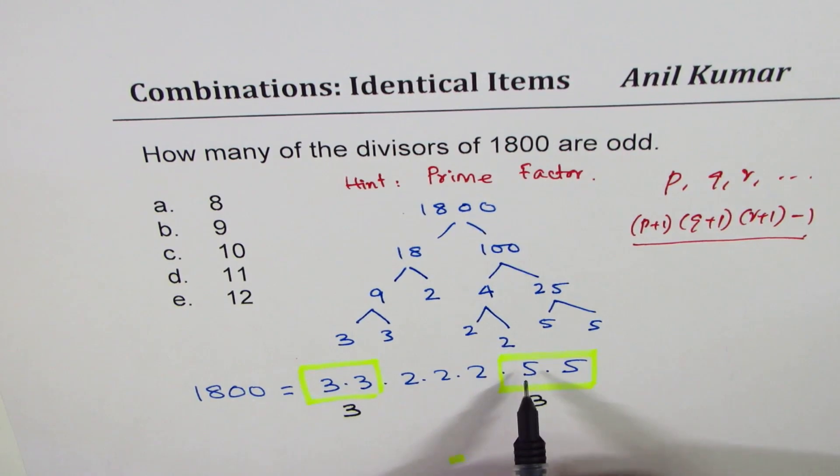Now we cannot have - we have to have a selection - so minus 1, we cannot do that, that we select no 3 and no 5. So minus 1 for that.